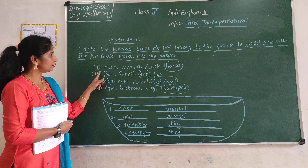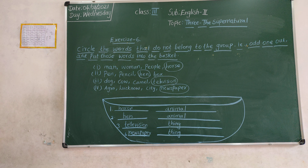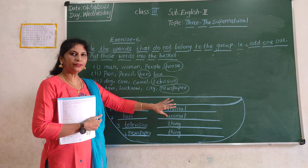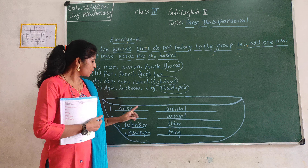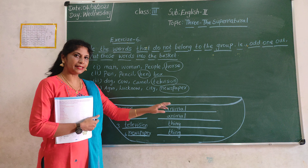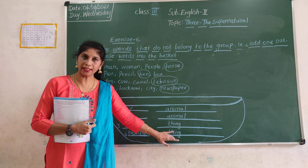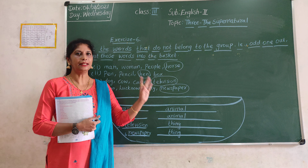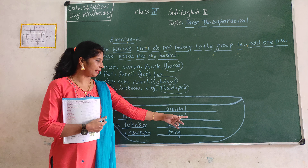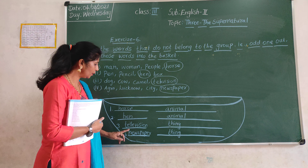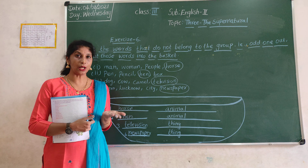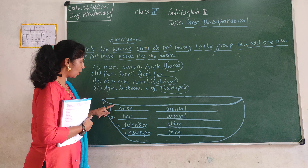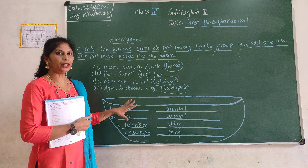Understood, children? So horse is an animal — it's a noun. Hen is an animal — it's a noun. Television is a thing — it's a noun. Newspaper is a thing — it's a noun. What is a noun, children? Naming words — name of a person, place, animal, or thing. So horse, hen, television, newspaper, and dog — all are naming words, nouns.